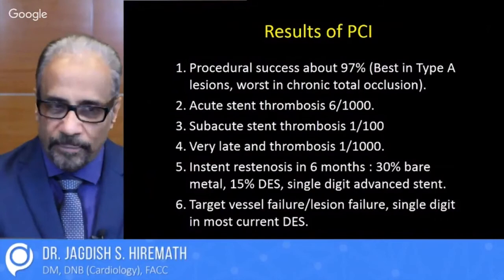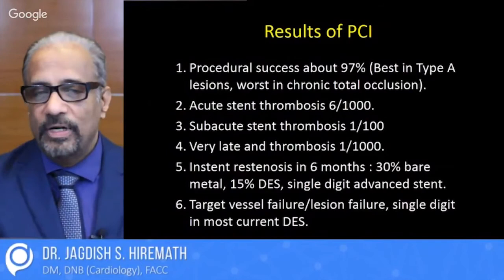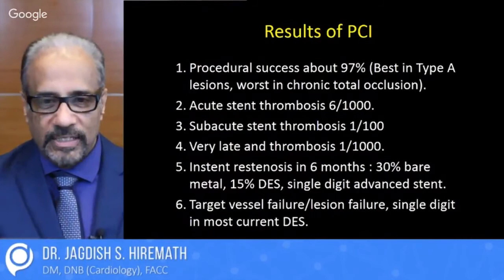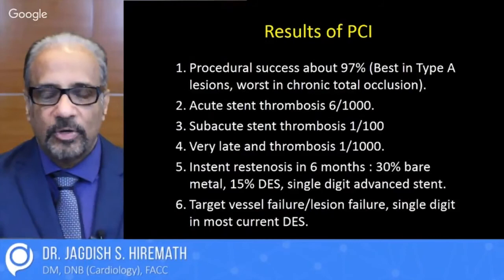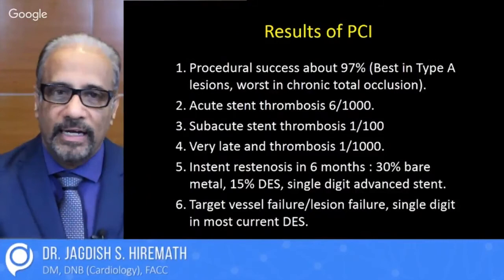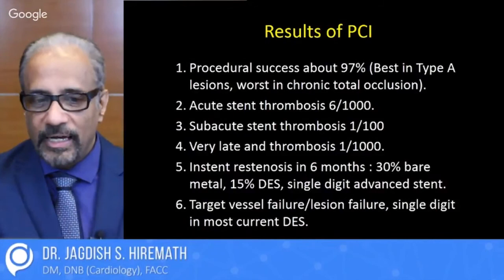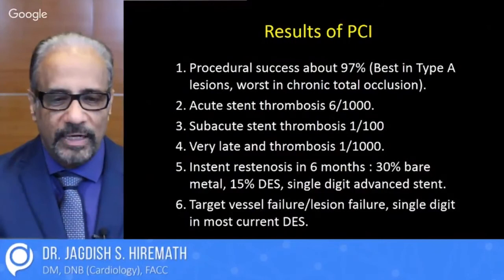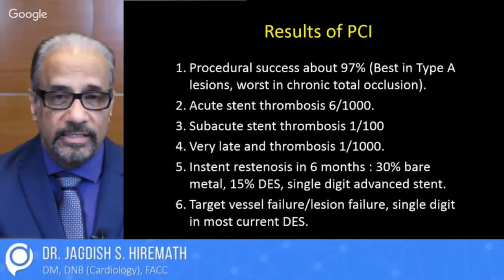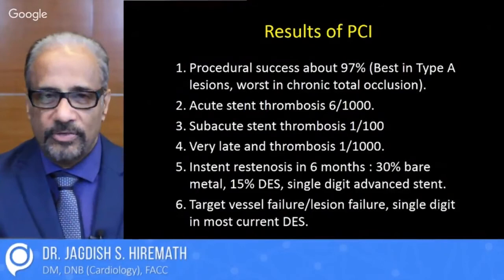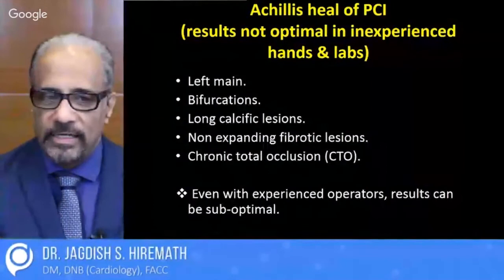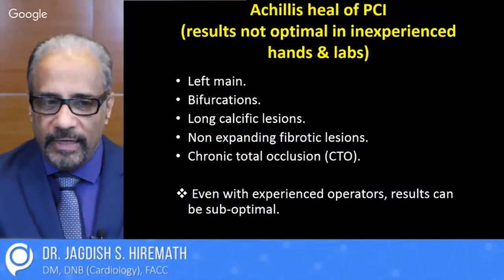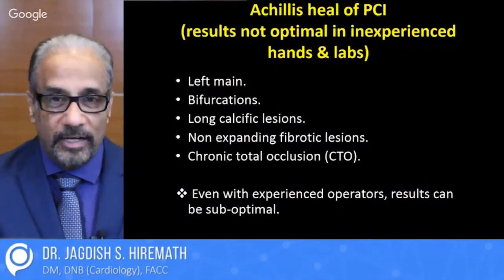Angioplasty has improved leaps and bounds. The results have not improved greatly because more and more complex cases get done. Procedural success is about 97% — best in type A lesions and worst in total occlusion segments. Acute stent thrombosis is about 0.6%, subacute stent thrombosis is 1 in 100, and very late thrombosis would be 1 in 1000. In-stent restenosis (ISR) takes place within six months — 30% in bare metal stents, 15% in drug-eluting stents, and a single digit in the fourth-generation drug-eluting stent, with a restenosis rate of 5 to 7%. The Achilles heel of angioplasty where results are not optimal in inexperienced hands is: left main, bifurcation lesions, long calcific lesions, non-expanding fibrotic lesions, and chronic total occlusions.